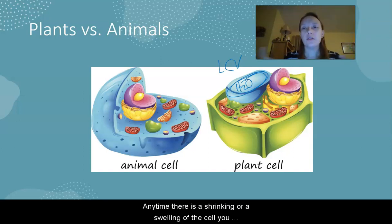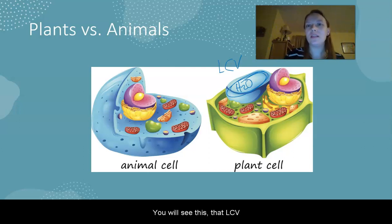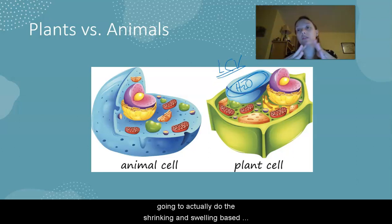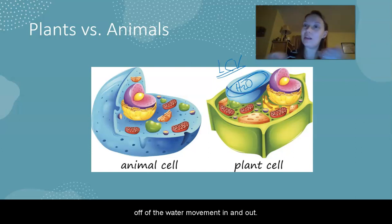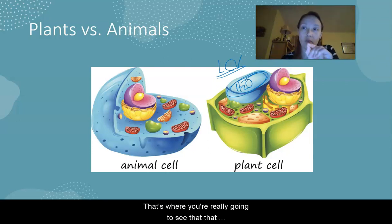Anytime there is a shrinking or a swelling of the cell, you won't see it because that cell wall is so sturdy. You will see this, that LCV, that central vacuole is what's going to respond, is what's going to actually do the shrinking and swelling based off of the water movement in and out. It's actually going to go in and out of that large central vacuole, so that's where you're really going to see that differentiation as it moves.